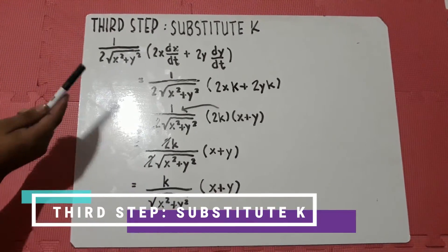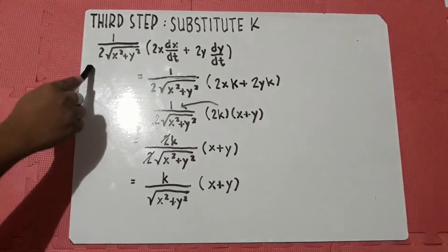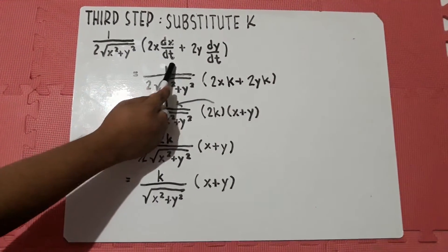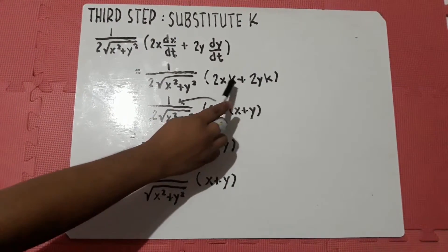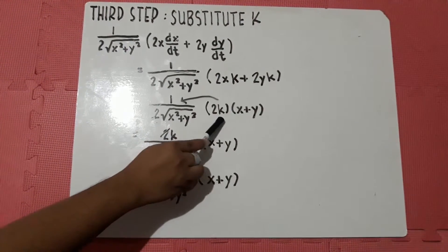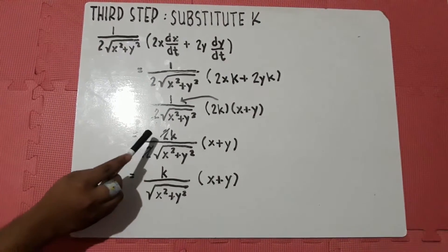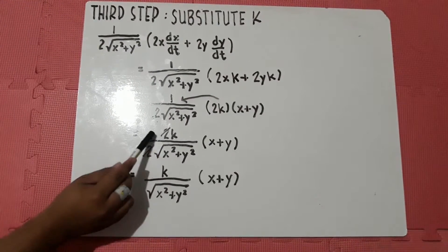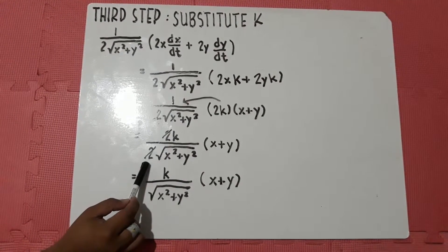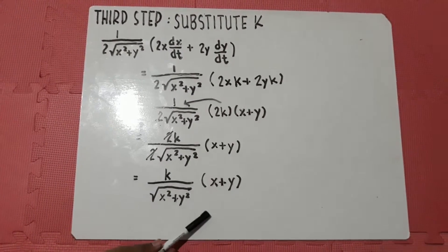For the third step, we substitute K for dx over dt and dy over dt in the derivative of the rate of approach found in the second step. After substituting, we factor it out, and it becomes 2K multiplied by x plus y. We then multiply 2K by 1, which gives 2K. Both the numerator and denominator have a factor of 2, so we cancel it out. This simplifies the equation to K over the square root of x-squared plus y-squared, multiplied by x plus y.